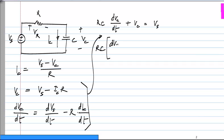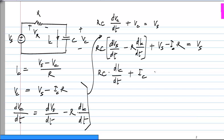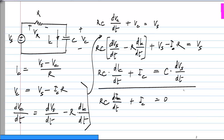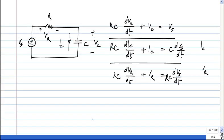Rc times d Vs by dt minus R d Ic by dt plus Vc which is Vs minus Ic times R equals Vs. And again, if Vs is known to be constant, and if you rearrange this, we will end up with Rc d Ic by dt plus Ic equals 0. Fine.